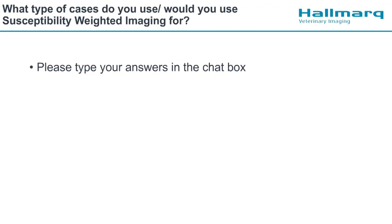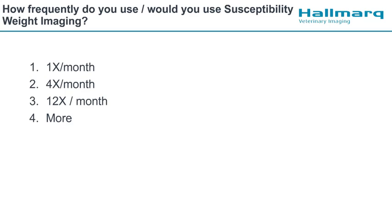If you have any specific diseases you want to let us know about, that would be good too. The third question is: how frequently do you use, or would you use susceptibility weighted imaging? Once a month, four times a month, 12 times a month, or even more than 12 times a month? Is this something you're using quite regularly all the time, or something that's only used occasionally? It looks like people really like it and use it.